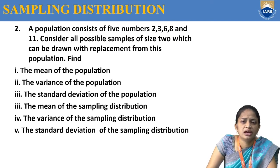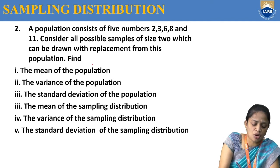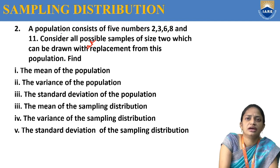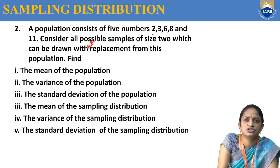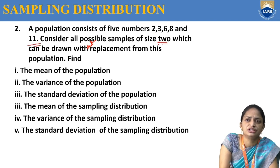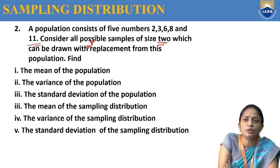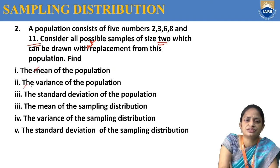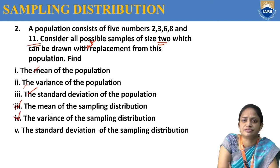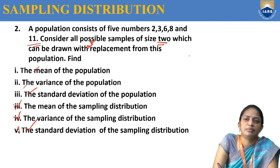Now one more problem. A population consists of 5 numbers: 2, 3, 6, 8, 11. Consider all possible samples of size 2 which can be drawn without replacement from this population. Find: mean, variance, and standard deviation of the population; and mean, variance, and standard deviation of the sampling distribution.